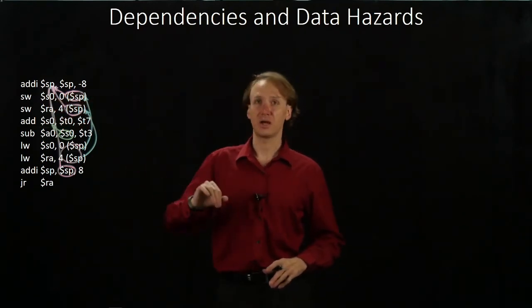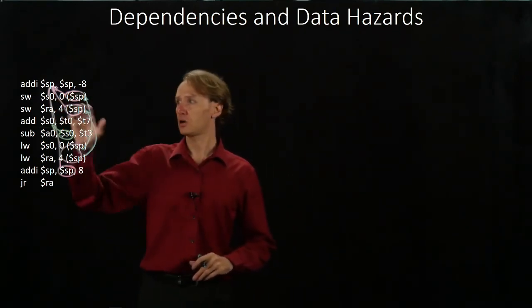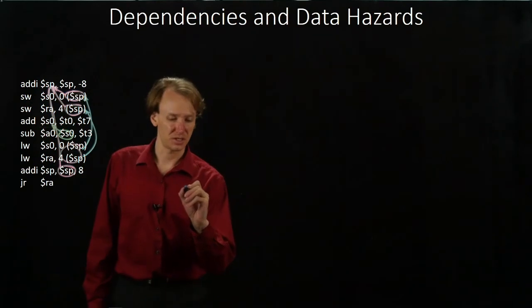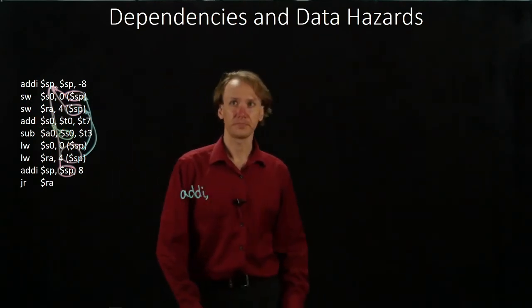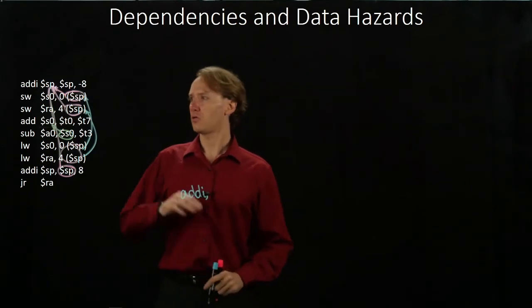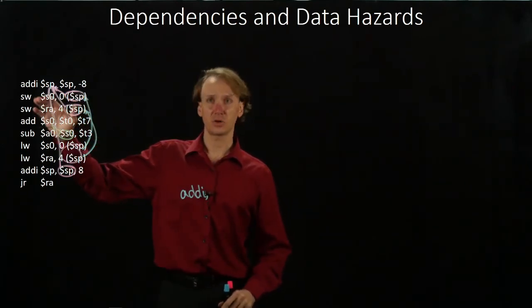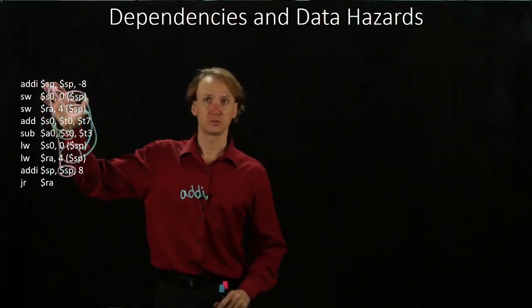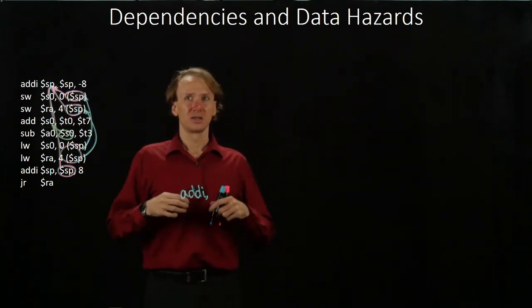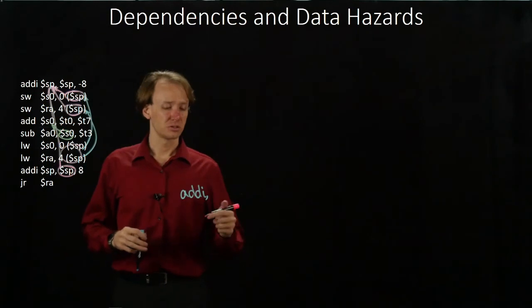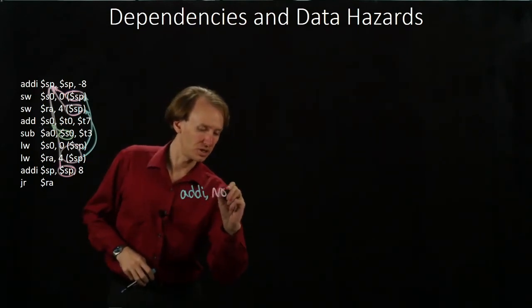So I'm going to use no-ops to get around the data hazards in this. I will start with my first instruction which is the add immediate instruction. Then I'll recognize that my store word instruction wants to use the results. It wants to use that stack pointer that we've just updated. So I'm going to need to wait two cycles. I will need two no-op instructions there.